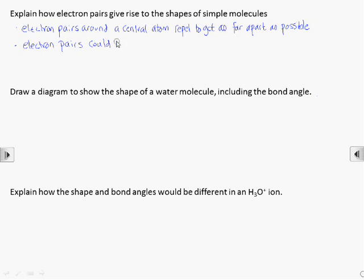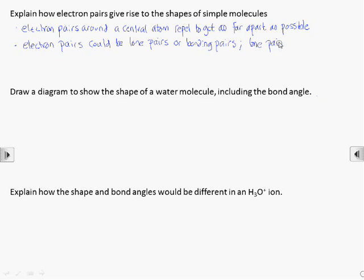Because they are held a little closer to the central atom, lone pairs have a stronger repelling effect, pushing the other electron pairs away more strongly. This has the effect of closing up angles between bonding pairs by about 2.5 degrees per lone pair.